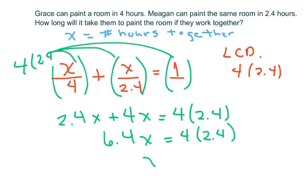And then divide to solve for X, the number of hours together. And that's gonna equal 1.5 hours.